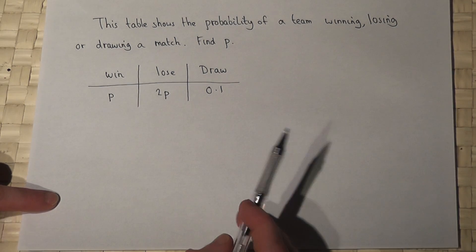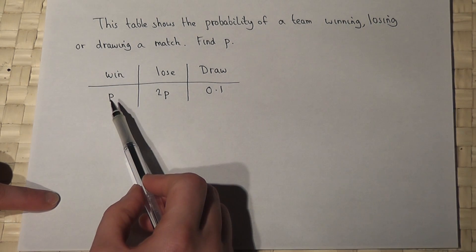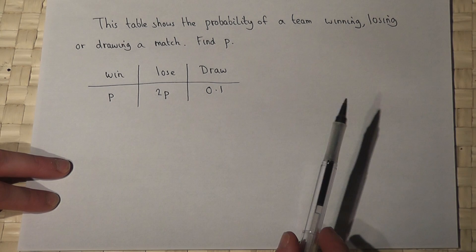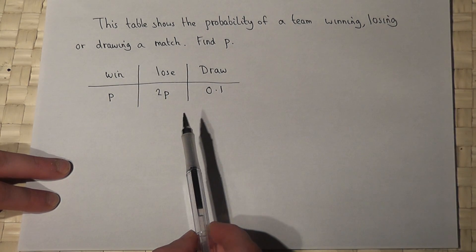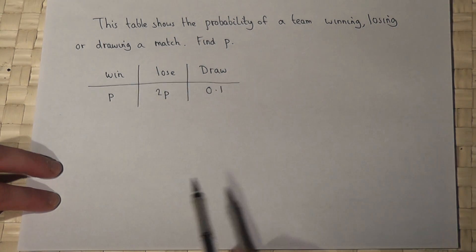This concise video reviews how to find missing probabilities in the table. We're told that this team will either win, lose, or draw. The chance of winning is p, the chance of losing is 2p, and the chance of drawing is 0.1.